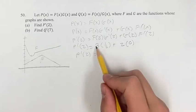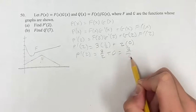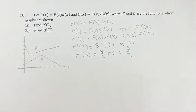So, calculating this, we have 3 times 1 half is 3 halves, plus 2 times 0 is 0, which means that the derivative of P at 2 is 3 halves.